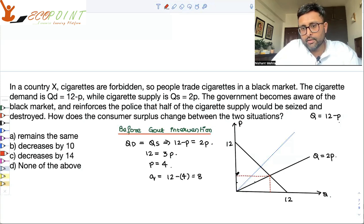So what do you have? Here, price is 4, demand is 8. And what is the consumer surplus out here?